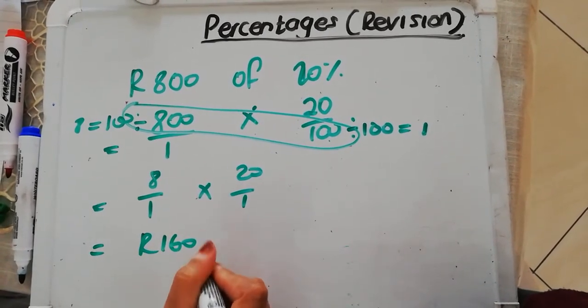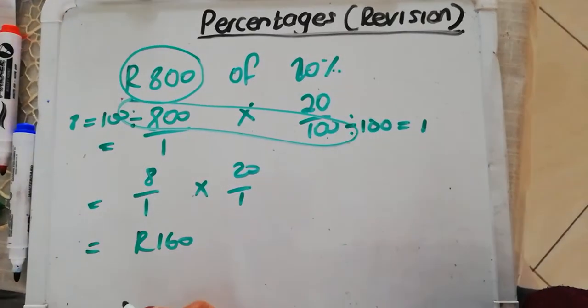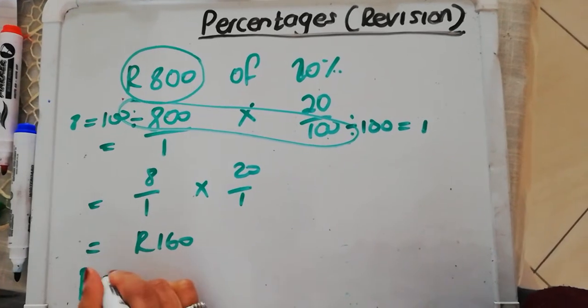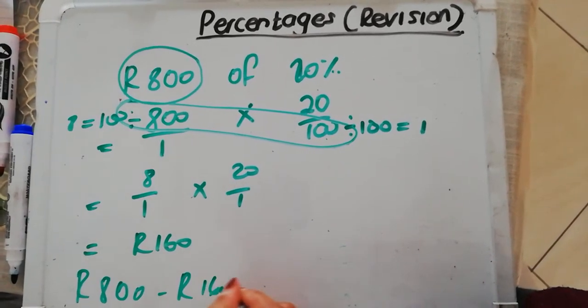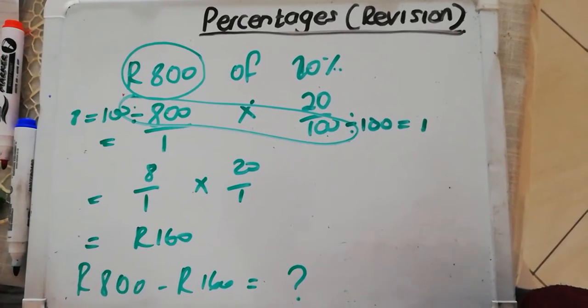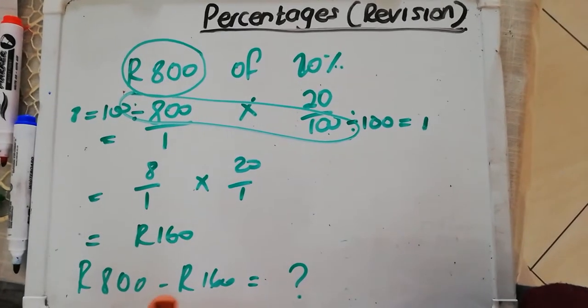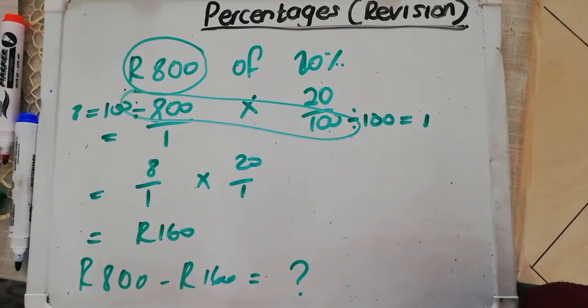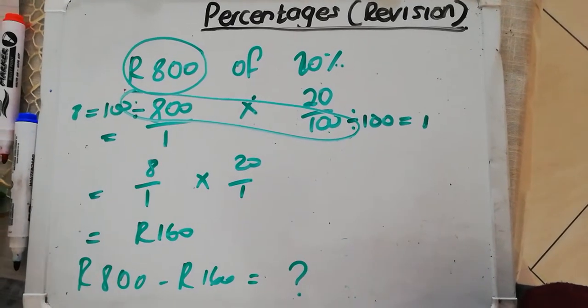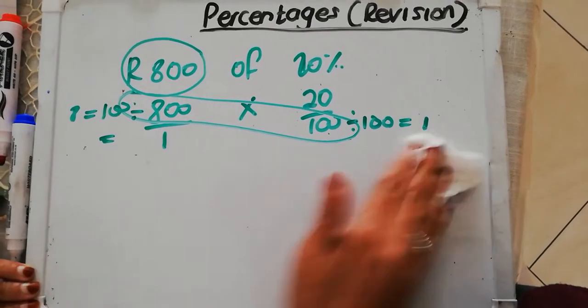But now we're not finished. Remember, the original price of the garment is 800 rand. You got a 20% discount. You want to know how much you're going to pay. So you're going to say 800 minus 160, and it will give you the amount that you're going to pay. So that is one scenario, or that is something else that we learned in percentages.